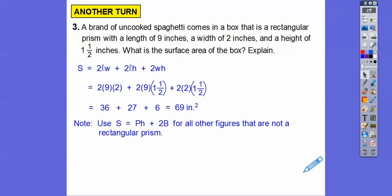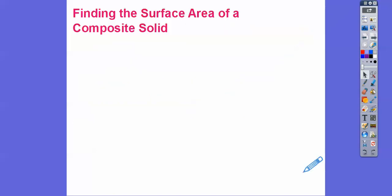Now let's use surface area for PH plus 2B for all other figures that are not rectangular prisms. The formula S = 2lw + 2lh + 2wh only works for rectangular prisms. If it's a triangular prism, hexagonal prism, or trapezoidal prism, it's totally different — we have to use PH plus 2B, where P is the perimeter of each base, H is the length between the two bases, and we add the area of the two bases.